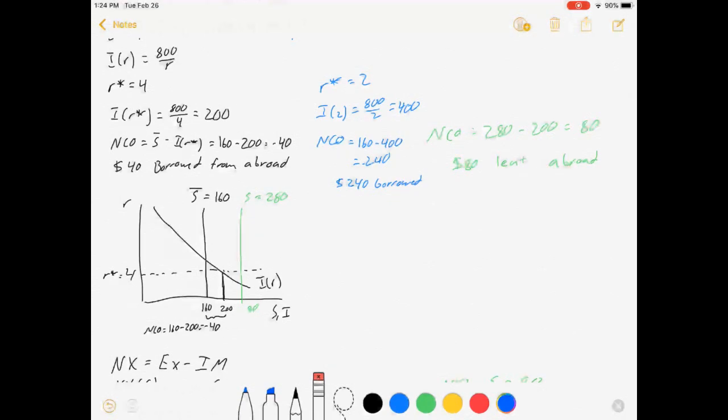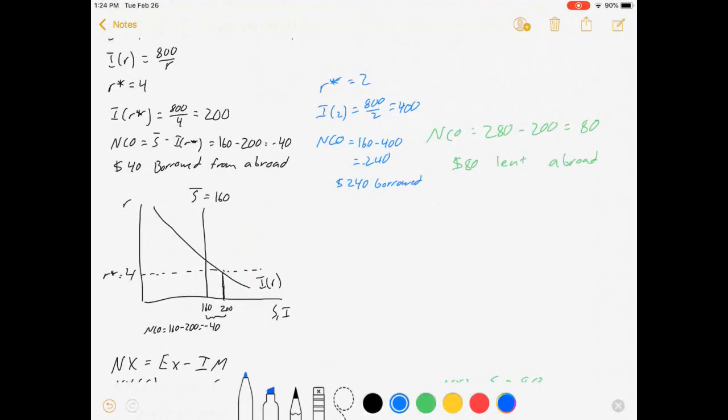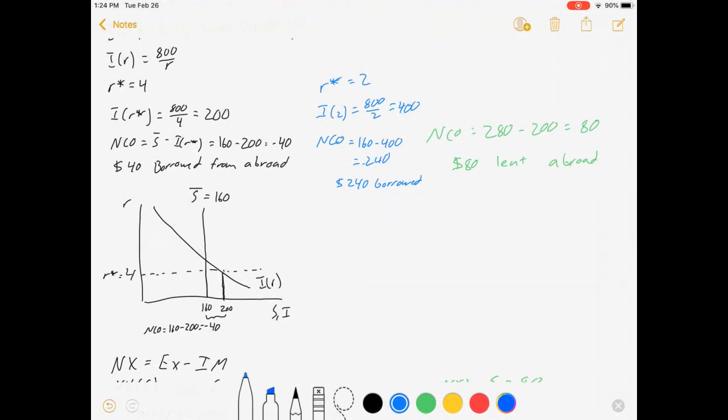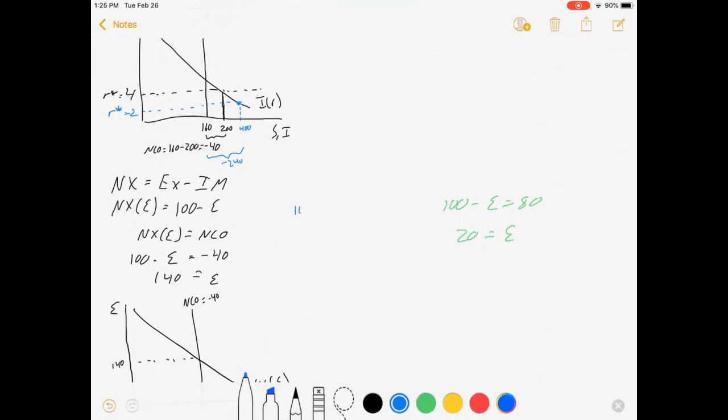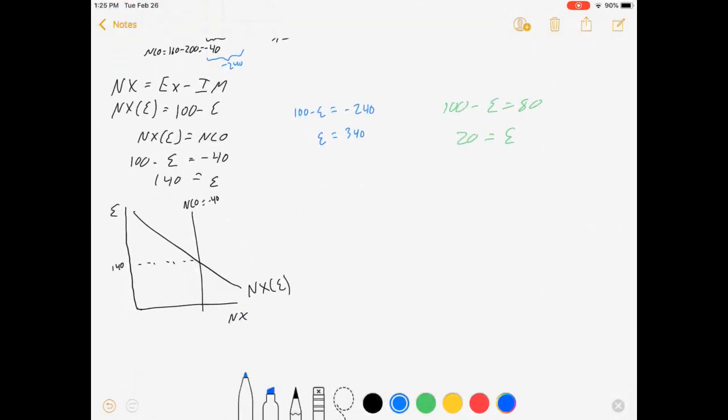Savings didn't change. But as the interest rate fell, our investment increases to 400. And the gap between 160 and 400 is now minus 240. How does it spill over into exports? Net exports, 100 minus the exchange rate, is equal to net capital flows, minus 240. The exchange rate is now 340. Net capital outflow has decreased to minus 240.